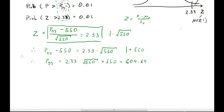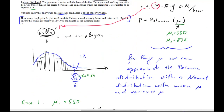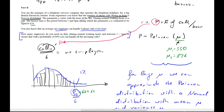That means the manager needs enough employees to handle approximately 605 calls. The number of employees is 605 divided by 6, which is approximately 101 employees. So during normal working hours (mu = 550), the manager should have 101 people in the phone center.